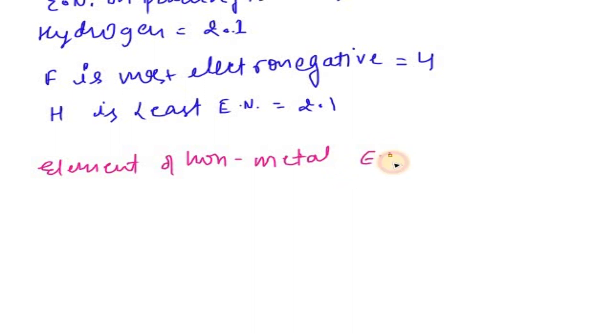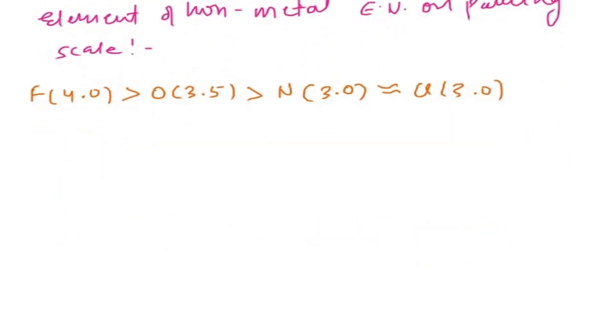So the value of non-metals on the Pauling scale: We found the most electronegative is fluorine, which is 4.0. After fluorine it is oxygen, which is 3.5. After oxygen it is nitrogen, which is 3.0. And nitrogen is approximately equal to chlorine, which is also considered as 3.0.